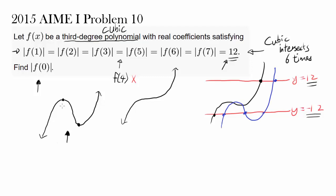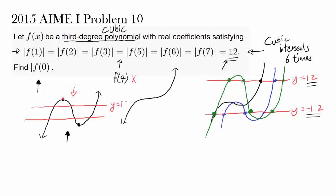You want as much curving as possible, so you want to use the form with two extrema. And pretty quickly you should find that the only way to intersect those lines six times is if the graph goes like this: intersecting y equals negative 12 three times below and y equals 12 three times above. You're going to intersect y equals 12 at points 1, 2, and 3, and y equals negative 12 three times as well.